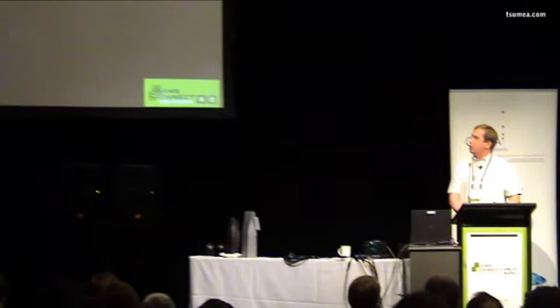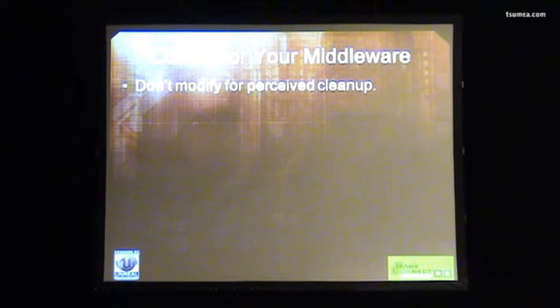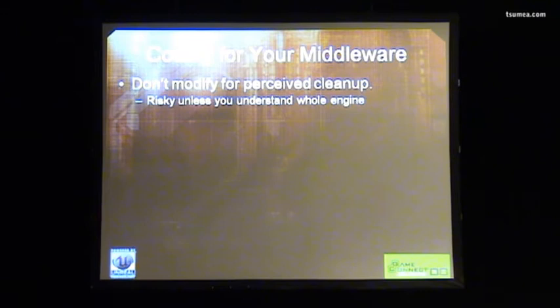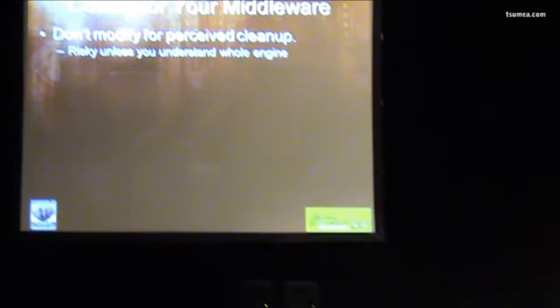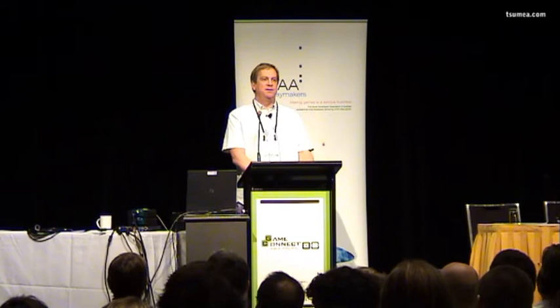When coding for your middleware, don't modify for perceived cleanup. If you go into the code and say 'that looks a little wonky, I'll clean this up' — don't do it. It's very risky unless you understand the whole engine. It's two million lines of code: if you touch something in point A, you may break something in point B that you're not aware of. If it's just a cleanup operation, leave it alone. You've got to consider the merge costs and support issues you'll encounter just to make things look pretty. We've seen plenty of teams do this — it's a big mistake.